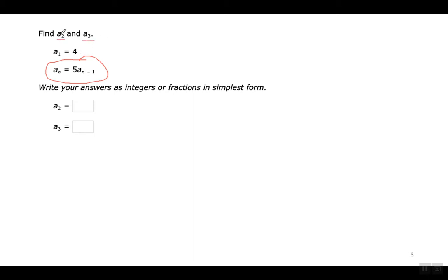I'm going to do the second one first. This is why it's called a recursive formula: in order for this formula to work, I need to use the term that came before the one I'm looking for. When I go to look for the second term, I need the first term in order to do it — I can't do it without knowing what the first term is. If they don't tell me what A1 is, I can't do it.